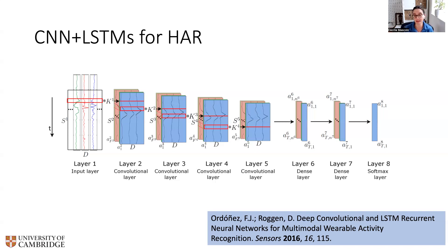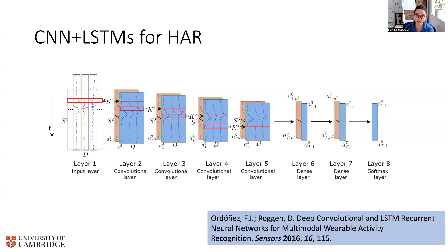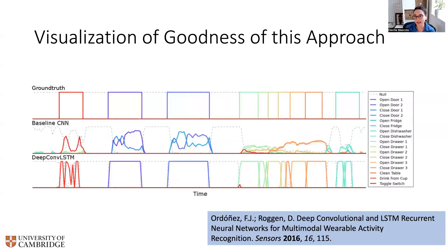This is kind of where the traditional application of machine learning to existing labeled data peaks. On labeled data, this is probably one of the best examples of architecture that works. Here is the graphical representation of why this works well, again from the same paper.